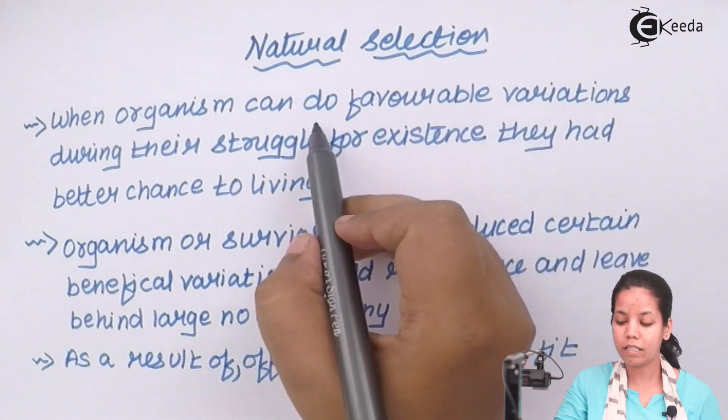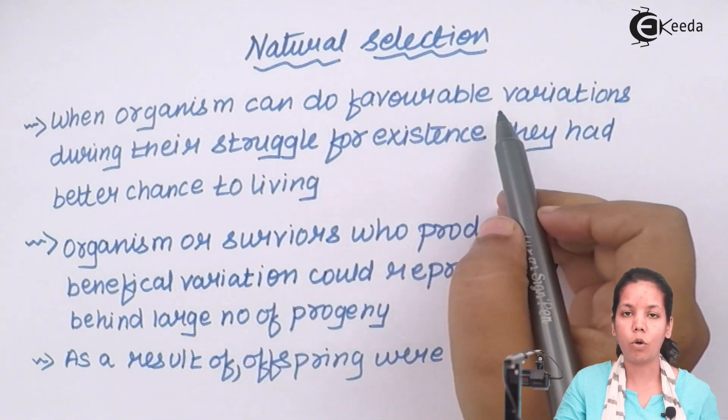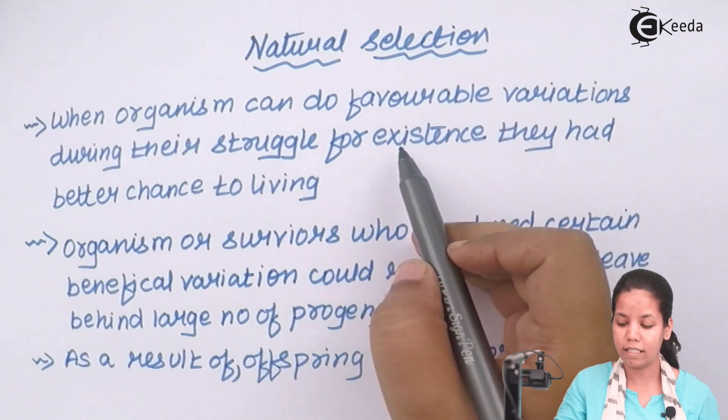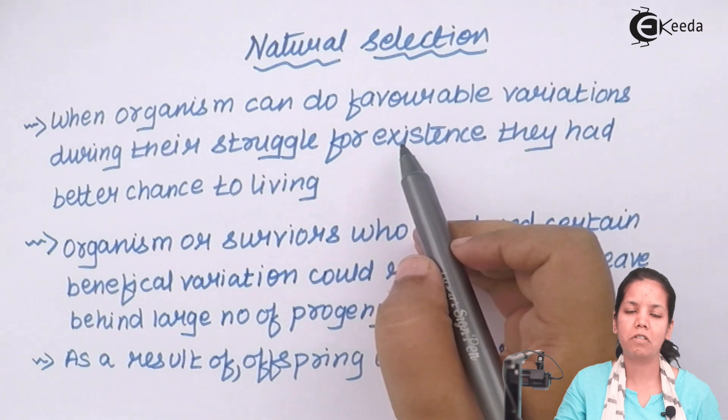Now whenever organisms can do favourable variations or adjustments according to the environment or the surrounding during their struggle to survive or exist, they have better chances to survive or thrive in that particular atmosphere.